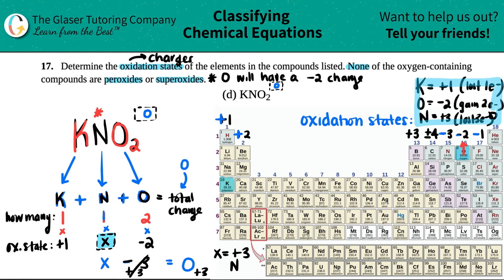There are all of your oxidation states: potassium, oxygen, and nitrogen. And that's it.